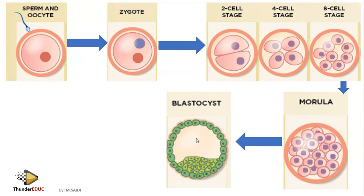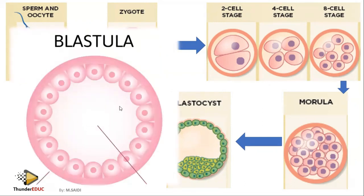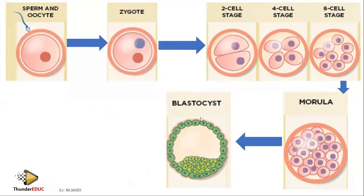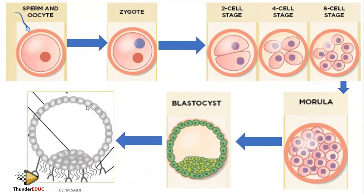This ball of cells undergoes mitosis continuously and forms a space inside — it becomes hollow, meaning it has a space inside. It forms a hollow ball of cells called a blastula or blastocyst. You can see the space inside is quite large. The blastocyst then forms an outer layer called the chorion. This outer layer starts to form finger-like projections called chorionic villi, which are very important for implantation.